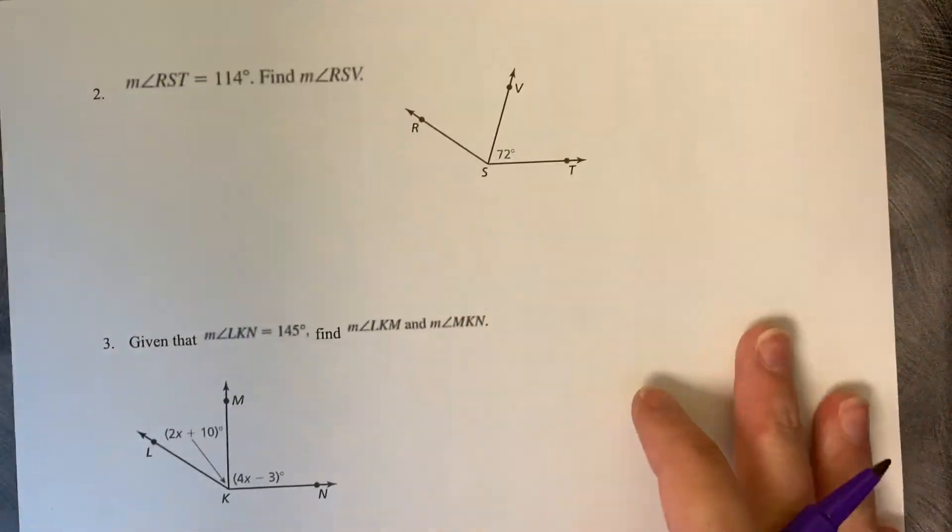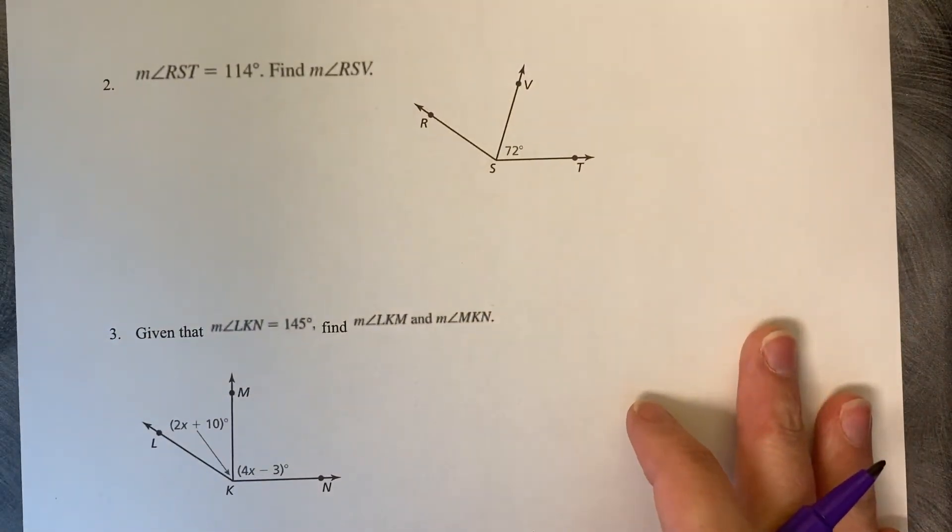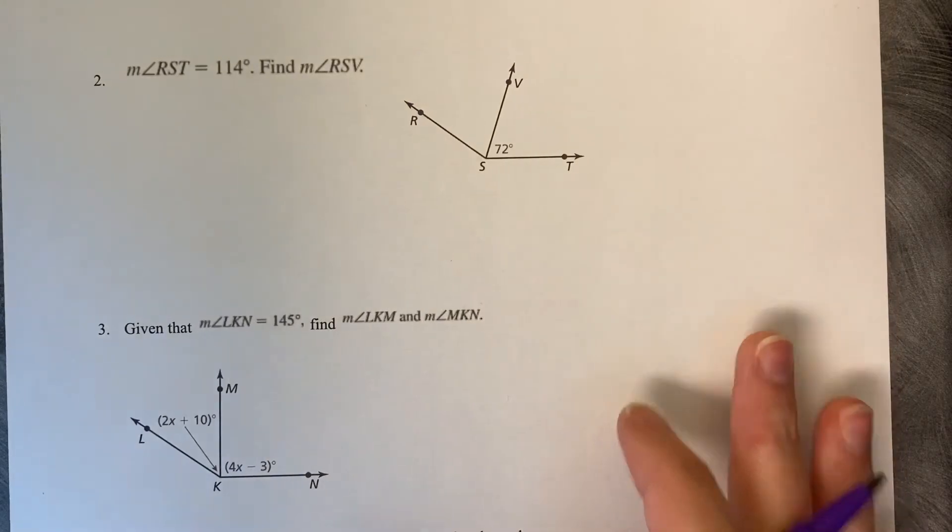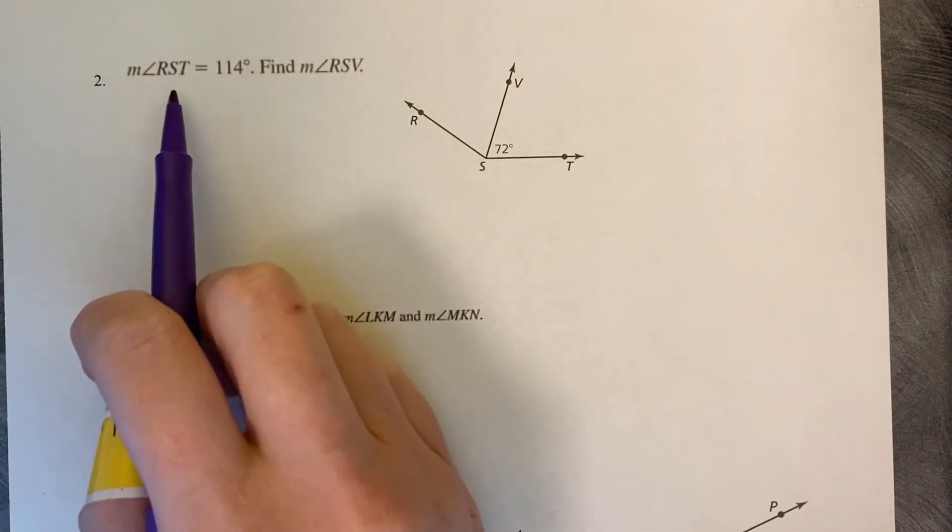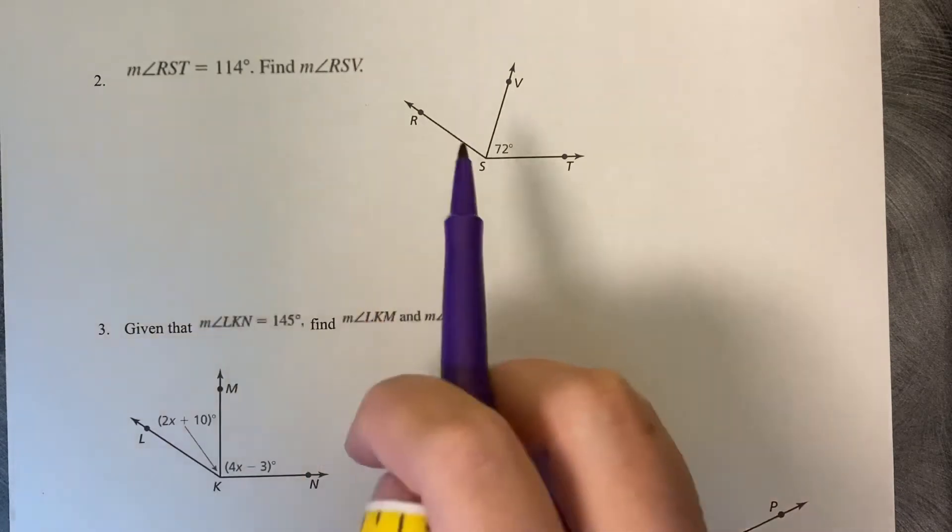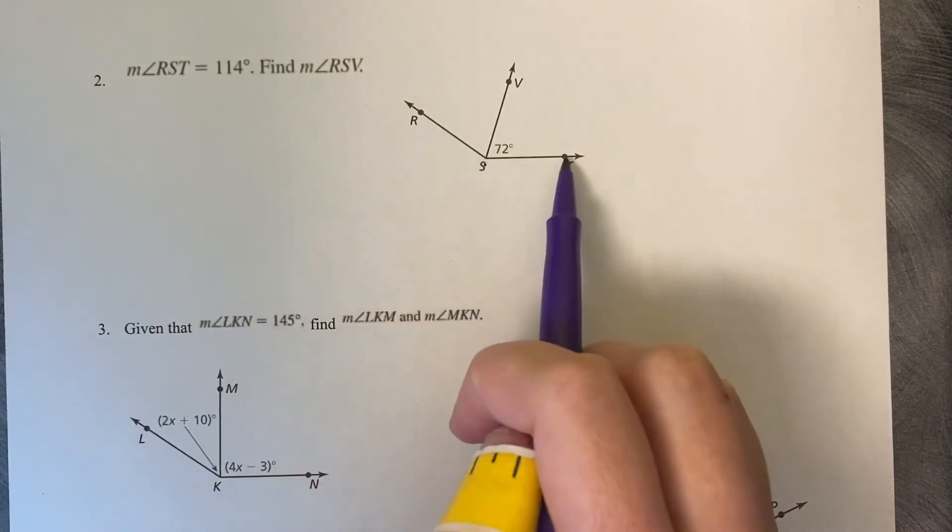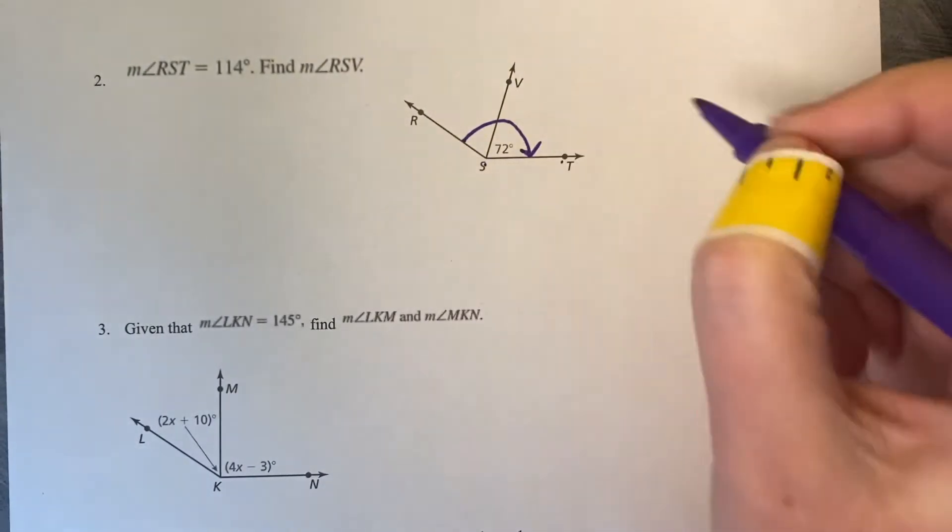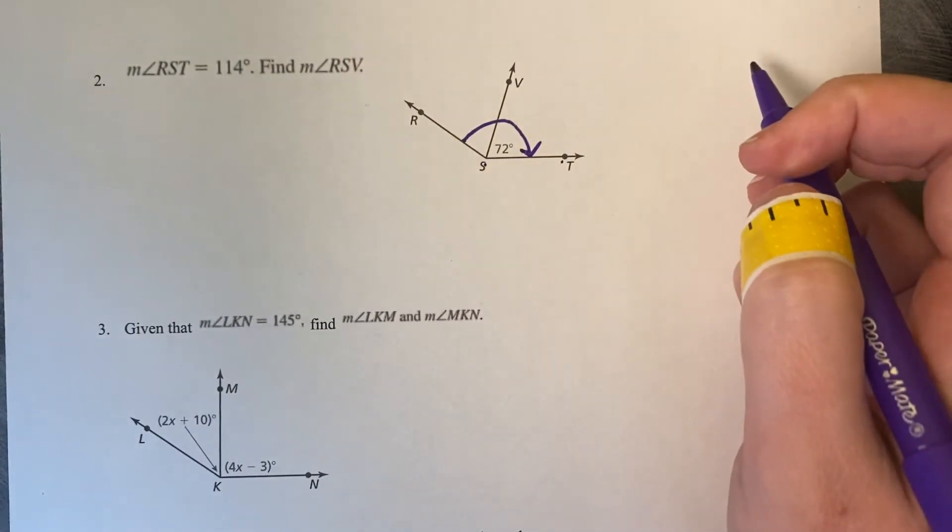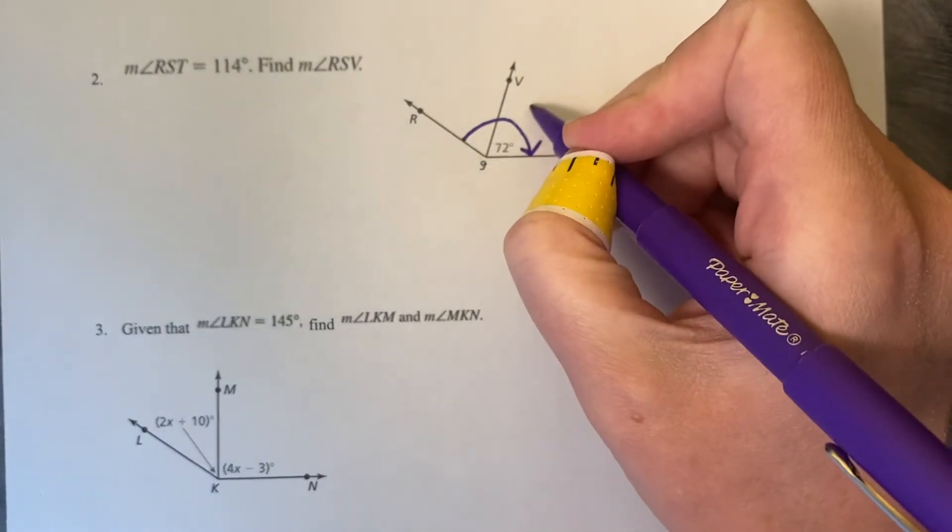Now that we've done one with numbers, let's try another one with numbers but a little bit of a different direction. The directions say the measure of RST. So that's R to S to T, so the whole thing from R to S to T, the whole thing is 114 degrees.